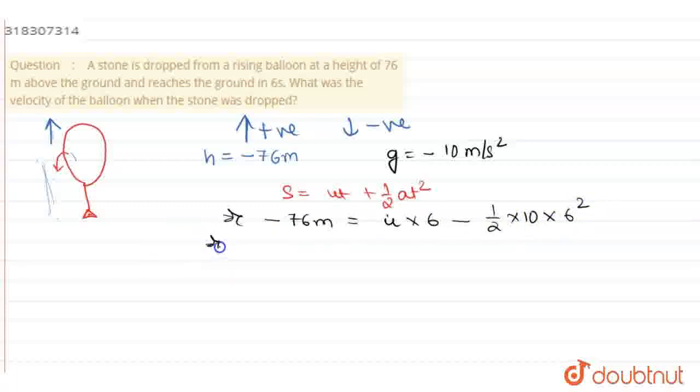So here, u equals 1 by 6 times (10 times 6 times 3 minus 76). This gives us 17.33 meters per second.